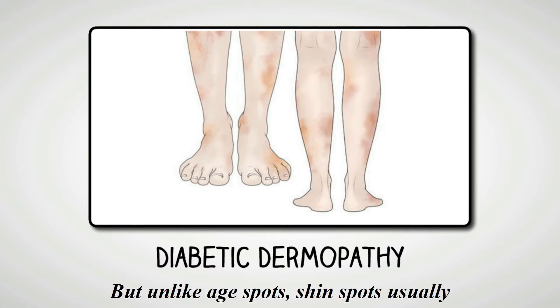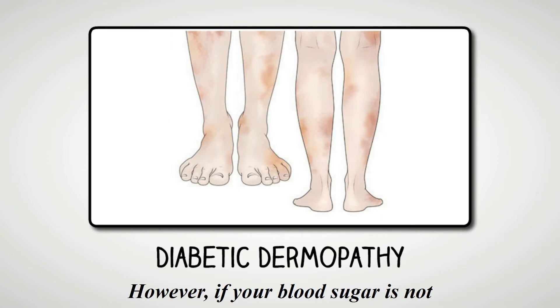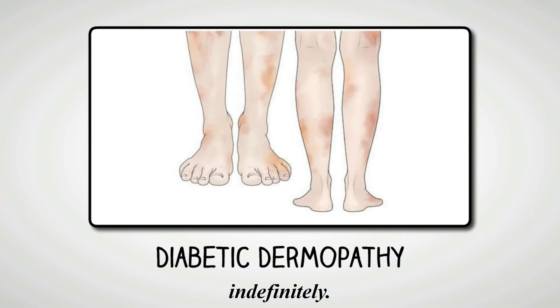But unlike age spots, shin spots usually start to fade after 18 to 24 months. However, if your blood sugar is not controlled, the spots can remain indefinitely.